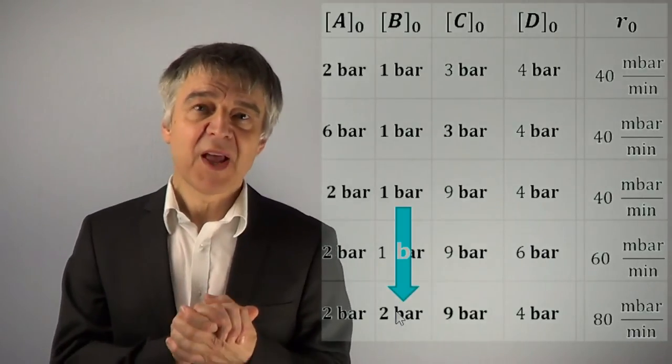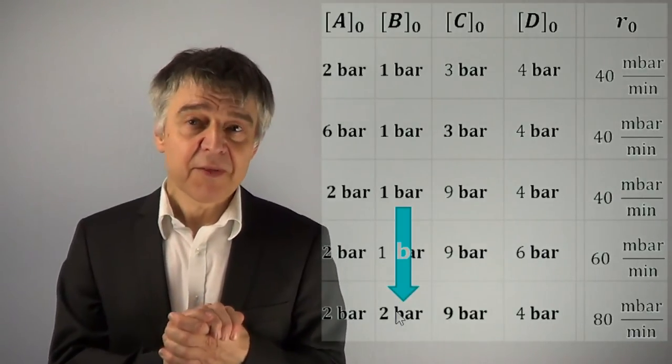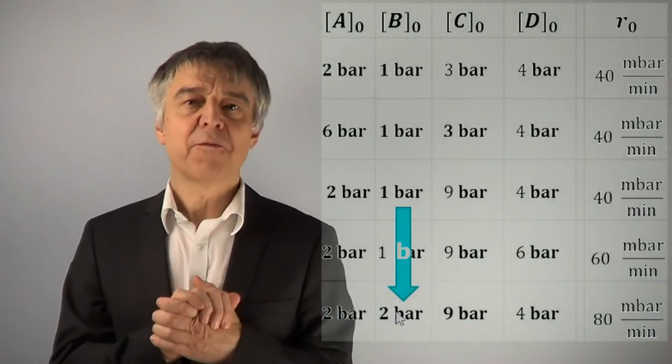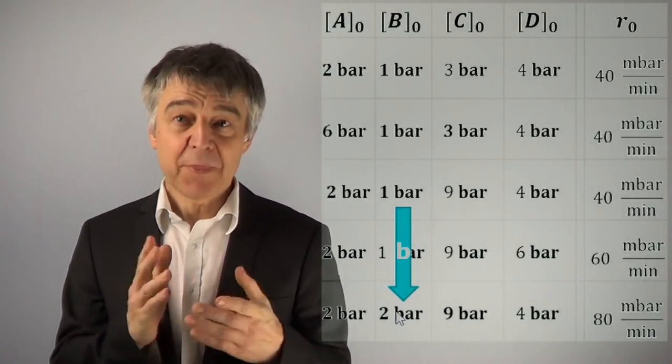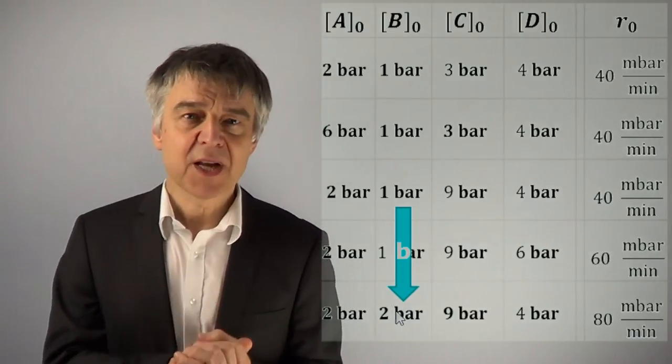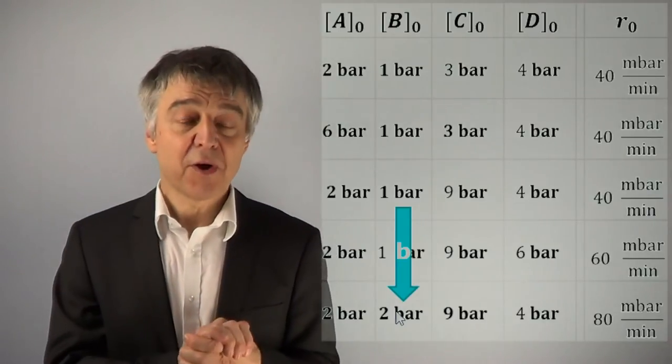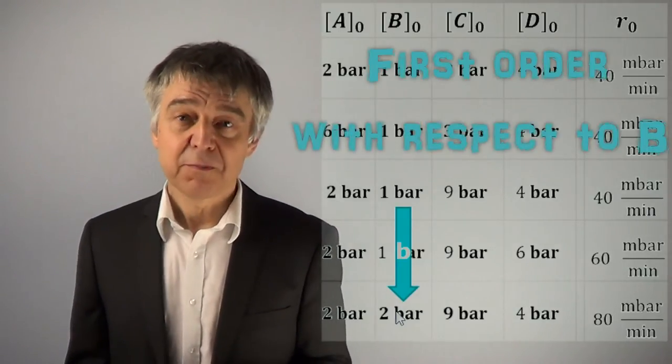If we compare, for example, the third and the fifth experiment, we see that only the concentration of B has changed. B has doubled and at the same time the reaction rate has doubled. This means that the reaction is first order with respect to B.